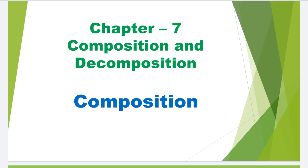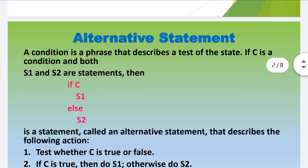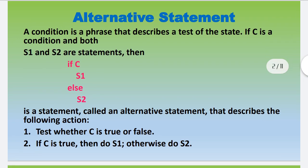Hi students, in this video we are going to learn about Chapter 7 Composition Continuation. First we are going to see about the alternative statement. This is one of the control flow statements. A condition is a phrase that describes a test of the state. If c is a condition and both s1 and s2 are statements, then you can see this statement execute based on a condition.